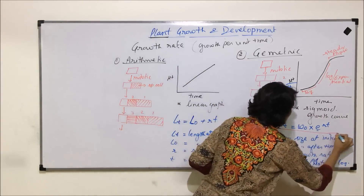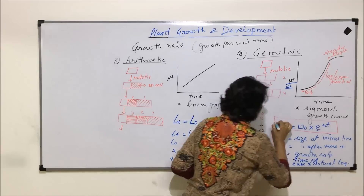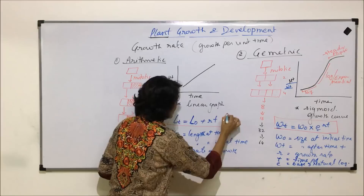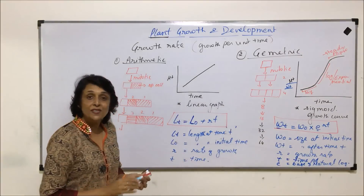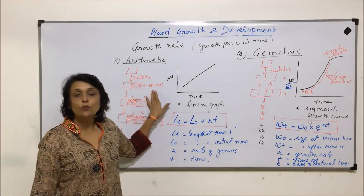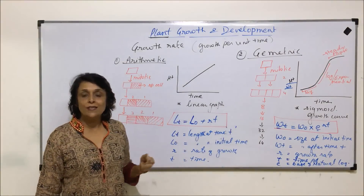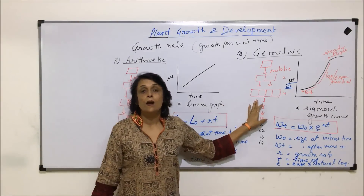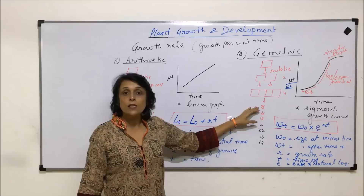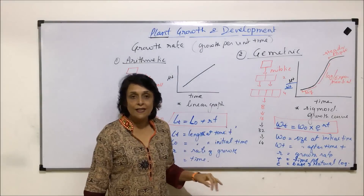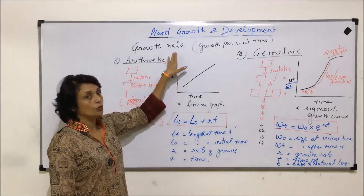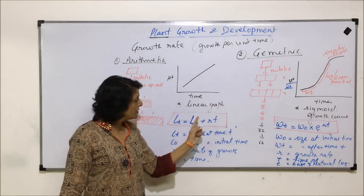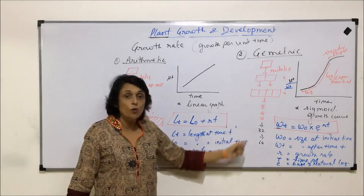So there are two formulas: one for geometric growth and one for arithmetic growth. The difference is that in arithmetic growth, out of two daughter cells one keeps dividing and one gets differentiated, whereas in geometric growth all the cells formed keep dividing. When we calculate the growth rate, we get two types of growth patterns, and these are the two formulas.